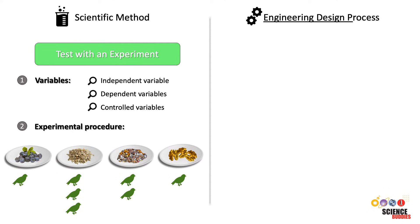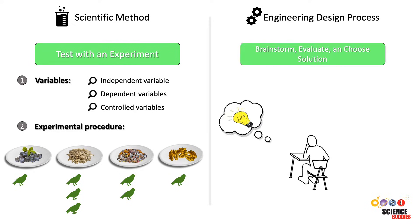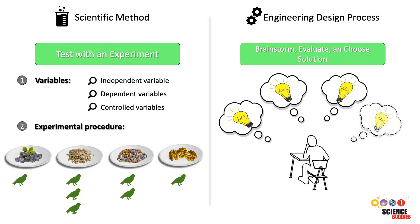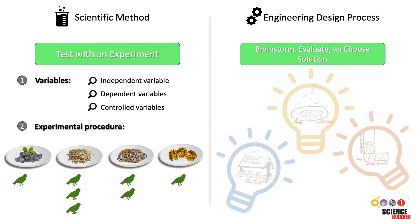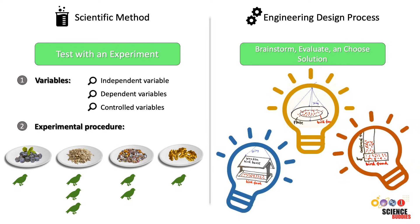When following the engineering design process, we won't do the same kind of experiment. Instead, we continue brainstorming solutions to our problem, evaluating the different solutions, and choosing the best one to try first. For our project, this means we would brainstorm different bird feeder designs and decide which one we will build first.